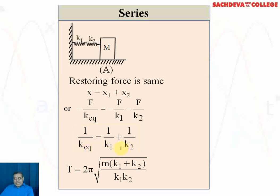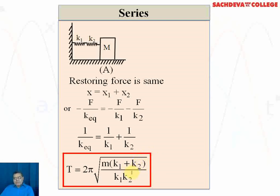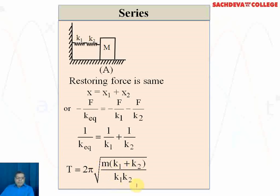Taking LCM and simplifying, we find the time period: T = 2π√(m/k). For k1 and k2 in series, this becomes T = 2π√(m(k1+k2)/(k1·k2)). The frequency of oscillation is the inverse: n = (1/2π)√(k1·k2 / (m·(k1+k2))), since T and n are inversely related.